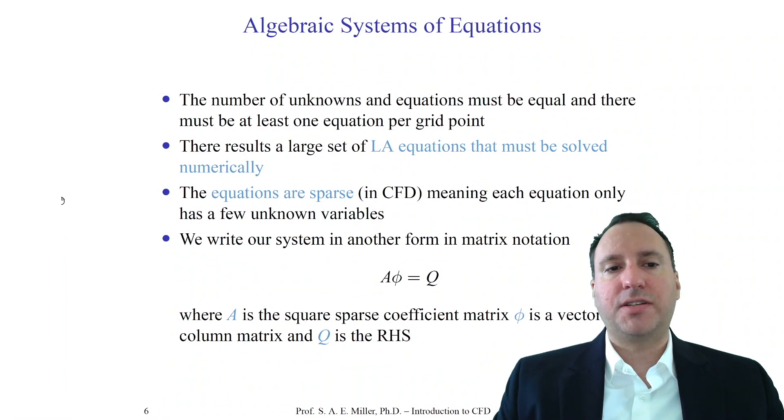Typically there will be at least one equation per grid point, and CFD will have more than one — perhaps 3, 4, 5, or even 12 equations per grid point. For every grid point with 12 equations, there would be 12 unknowns. The order of the coefficient matrix equals the number of unknowns and equations in the computational grid. This can result in a very large set of equations solved numerically — simultaneously — through iterative methods or implicit direct methods. An iterative method changes the solution vector phi over time to reduce the residual, while a direct solver finds the solution without iterative techniques.